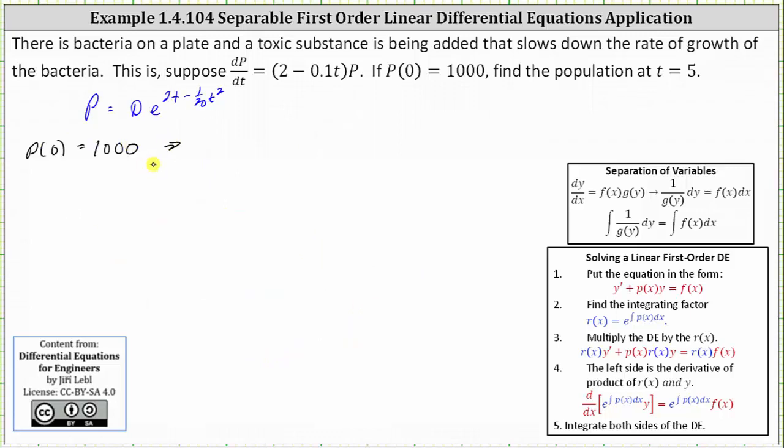Using the initial condition, we substitute 0 for t and 1,000 for p. This gives us 1,000 equals D times e^(2·0 - 1/20·0²), which gives us e^0 and e^0 is equal to 1, and therefore D is equal to 1,000.